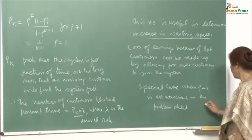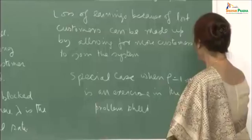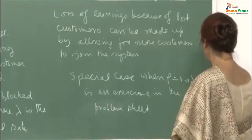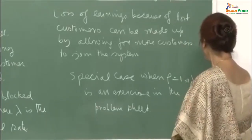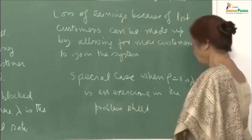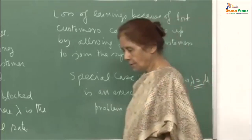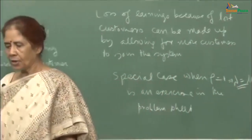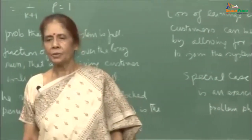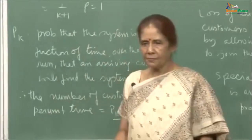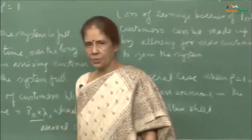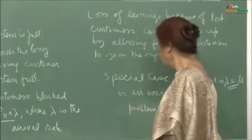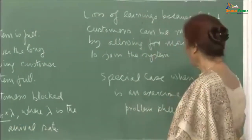The simple case when rho equals 1 is given as exercise 9 in the problem sheet, which we will discuss at the end of this lecture. All quantities can be computed when rho equals 1, which implies lambda equals mu. The service rate equals the arrival rate. There is no question of the system blowing up, because it is a finite space model.